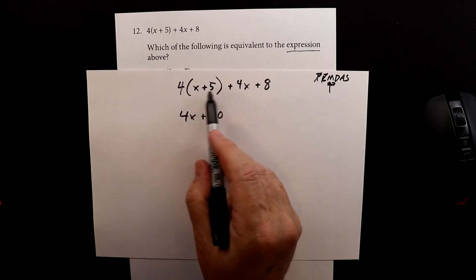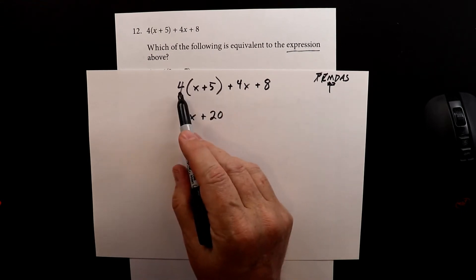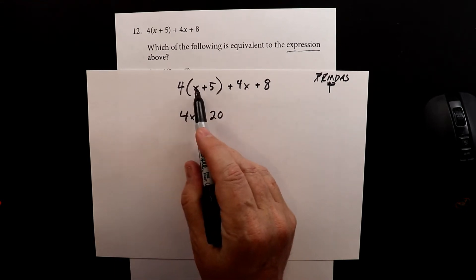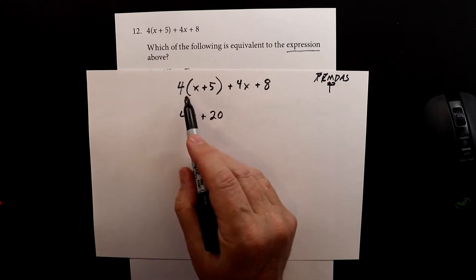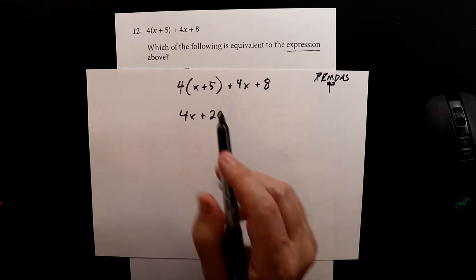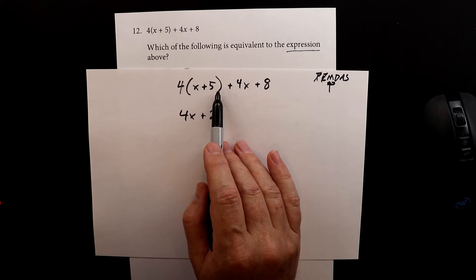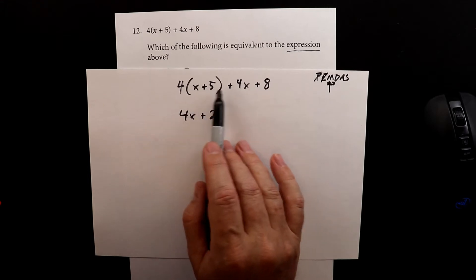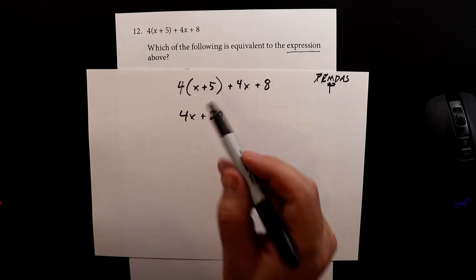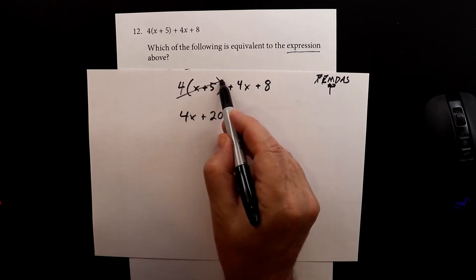This is where people get mixed up sometimes. They might remember to do the 4x but then they'll just bring down the 5, and that's not what you do. This parentheses ends here, so you don't do any more multiplications — you're done here.